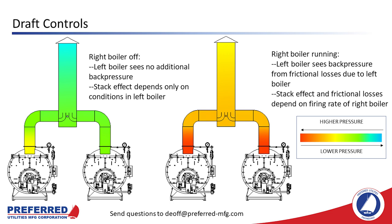Another thought experiment illustrates this: on the left, the right-hand boiler is off, so the left-hand boiler sees no additional back pressure and stack effect depends only on what the left-hand boiler is doing. On the right, the right-hand boiler is running at high fire, producing maximum stack effect and maximum frictional losses. Depending on stack height and diameter, the pressure at the bottom junction of the two stacks can be significantly higher or lower than when the right-hand boiler isn't running. The difference in pressure results in different airflow through the left-hand boiler, and burners don't react well to unexpected variations in airflow.